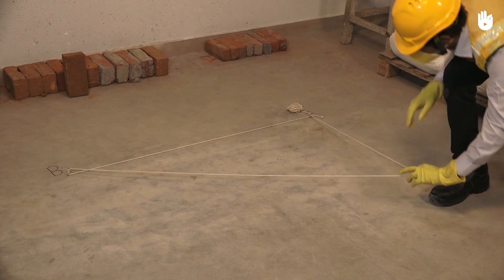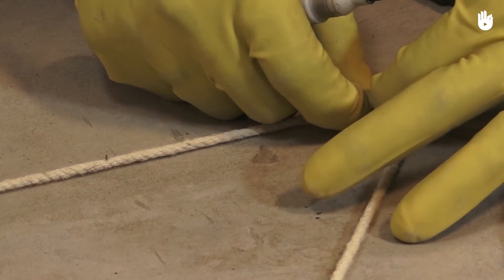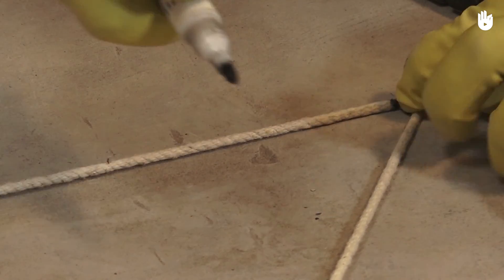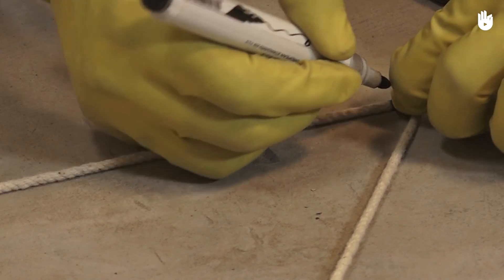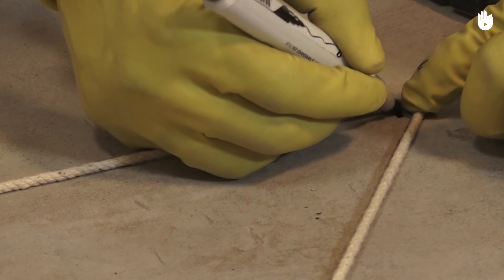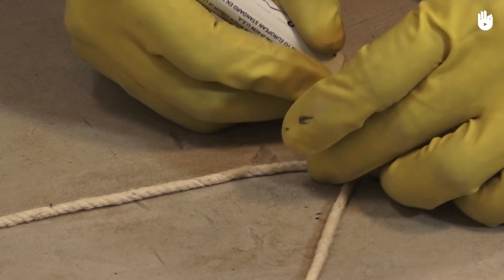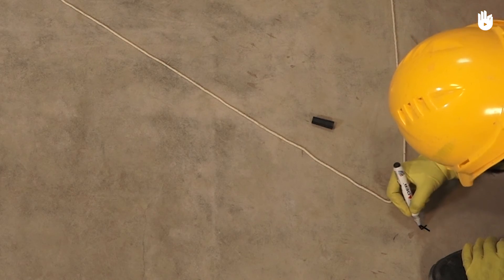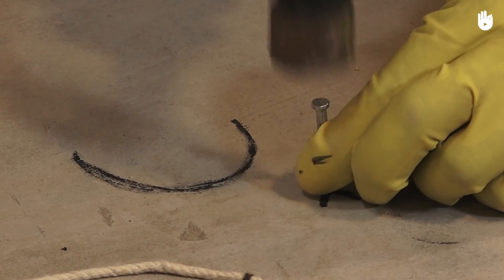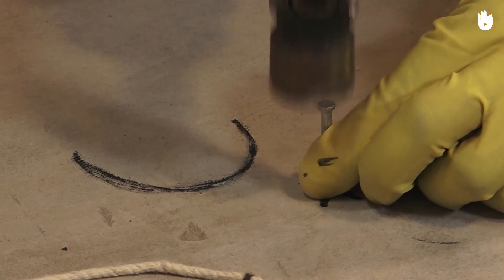Pull out the loose section of the string by holding the point that marks 3 feet from point A and 5 feet from point B. Hold it down on the ground at the spot where it forms a triangle with taut sides. Mark this spot as point C. Hammer a nail into this point.